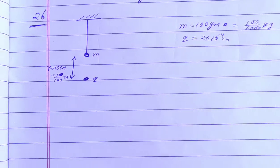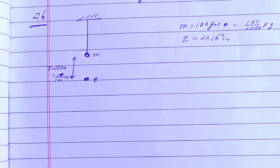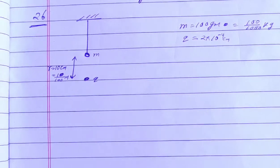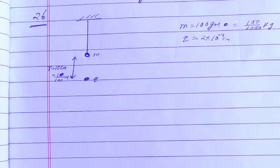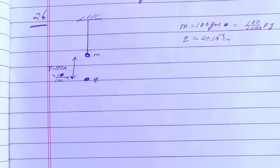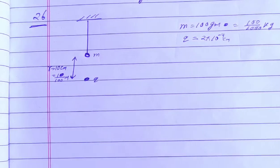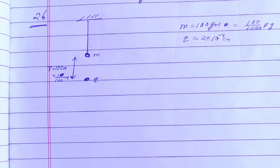HC Verma solution, Chapter 29: Electric Field and Potential, Question 26. A particle having a charge of 2×10⁻⁴ coulomb is placed directly below and at a separation of 10 centimeters from the bob of a simple pendulum at rest. The mass of the bob is 100 grams. What charge should the bob be given so that the string becomes loose?